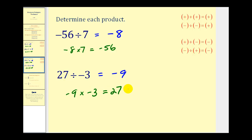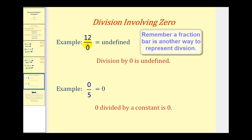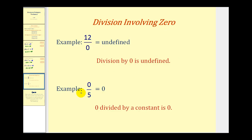Okay, there's one last thing to mention about division of integers. Twelve divided by zero is actually undefined. We can't take a certain number of items and divide it into groups of zero. That's not possible. So division by zero is undefined. However, zero divided by five would be equal to zero. We can take zero items and divide it into five groups. It's just that each group would have zero items. So zero divided by a constant will always be zero.